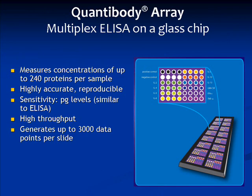RayBiotech's Quantibody Array is a multiplex ELISA on a glass chip. It can quantitatively measure the concentrations of up to 240 different proteins per sample. The data is highly accurate and reproducible, with sensitivities in the low picogram range. The Quantibody Array offers the advantage of high-throughput analysis, and generates up to 3,000 data points per slide.